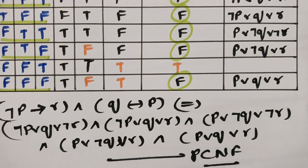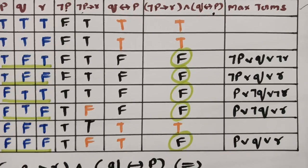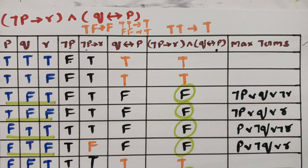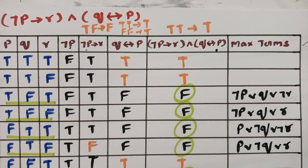This is how we solve for the Principal Conjunctive Normal Form. Using the truth value table, you can find the PCNF easily. First find the max terms — variables or their negations connected by disjunction — then multiply them to get the PCNF. This topic from mathematical logic and DMS will be very easy and scoring if you practice consistently. Please like, subscribe, and share with friends.